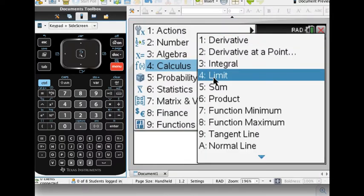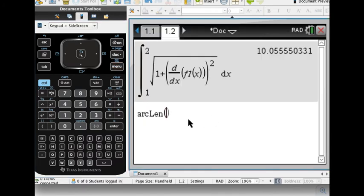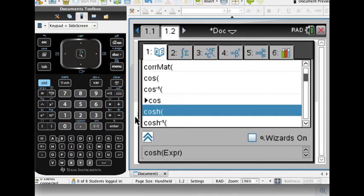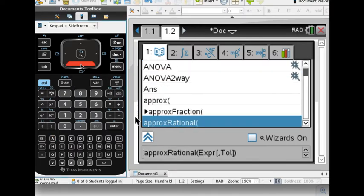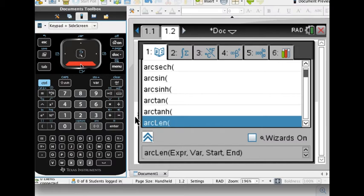So if I go to my calculus menu, I can go down and there is an arc length tool here. And the syntax for it, let me go find that in the catalog. Let me type in a to get to arc length. I can't remember the syntax. So I just go down here and look. ArcLen. Expression, variable, start, and end. Okay, so let me escape out of there.